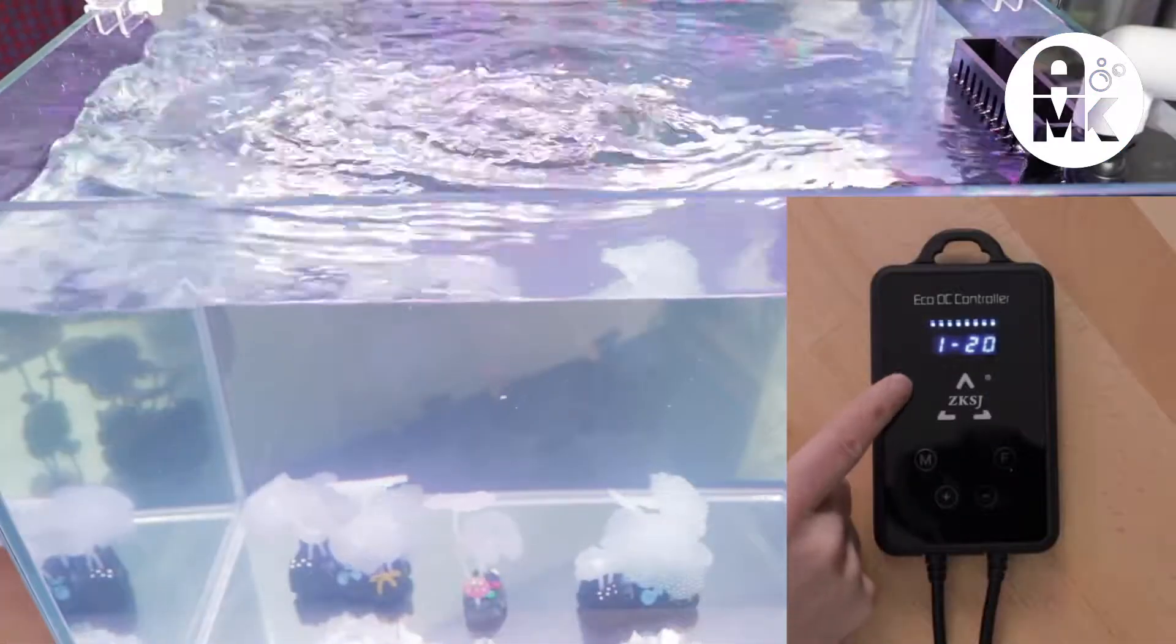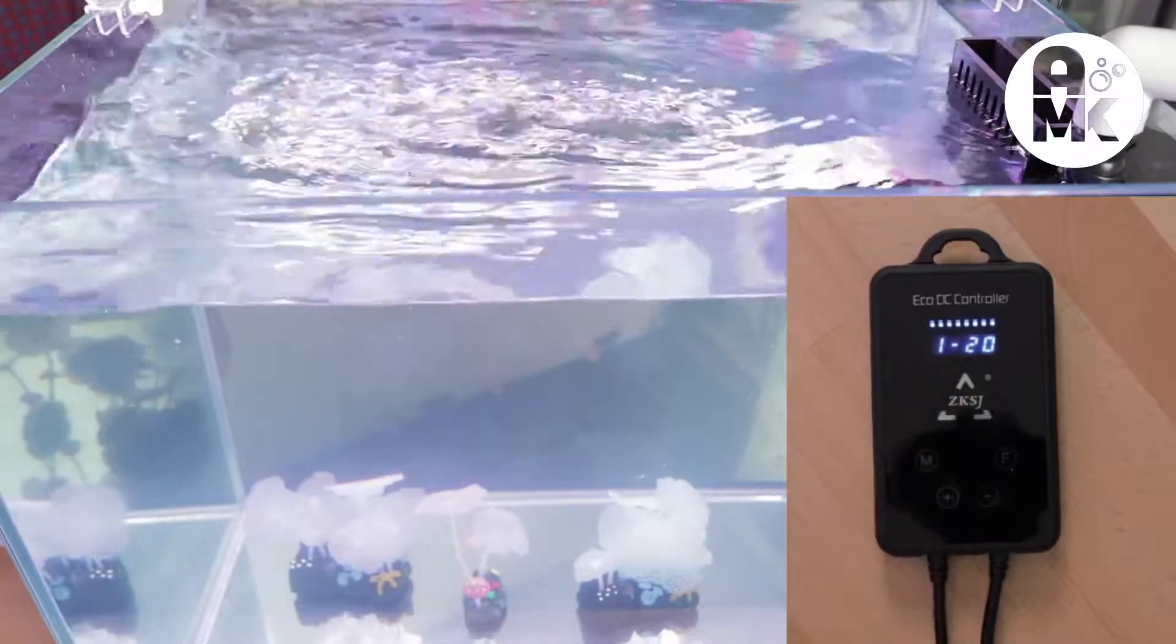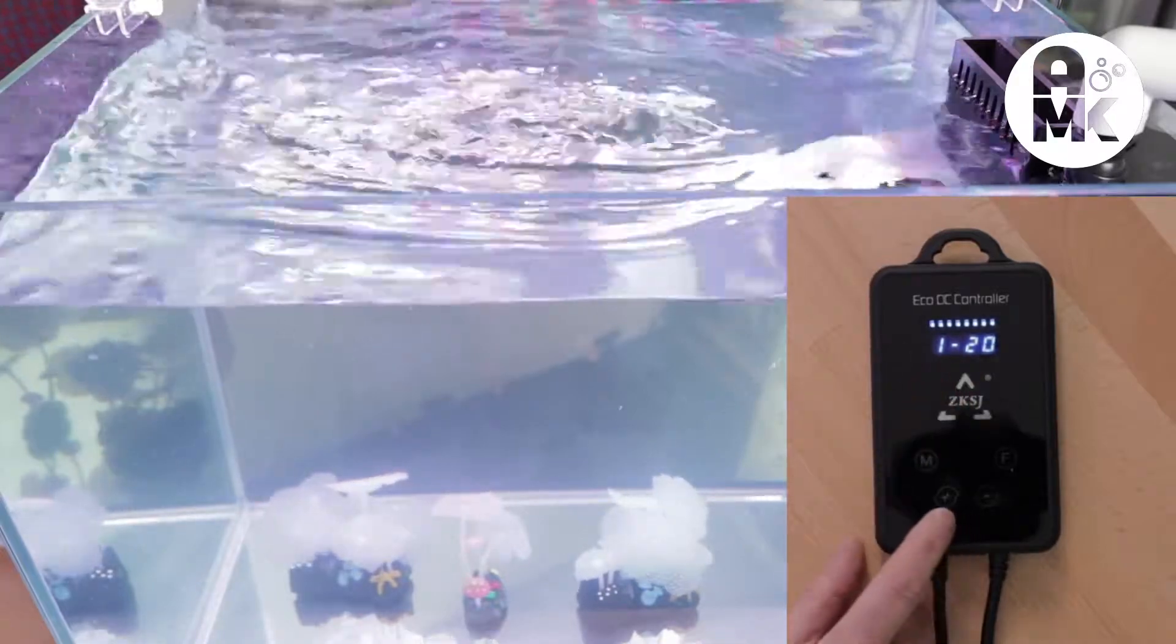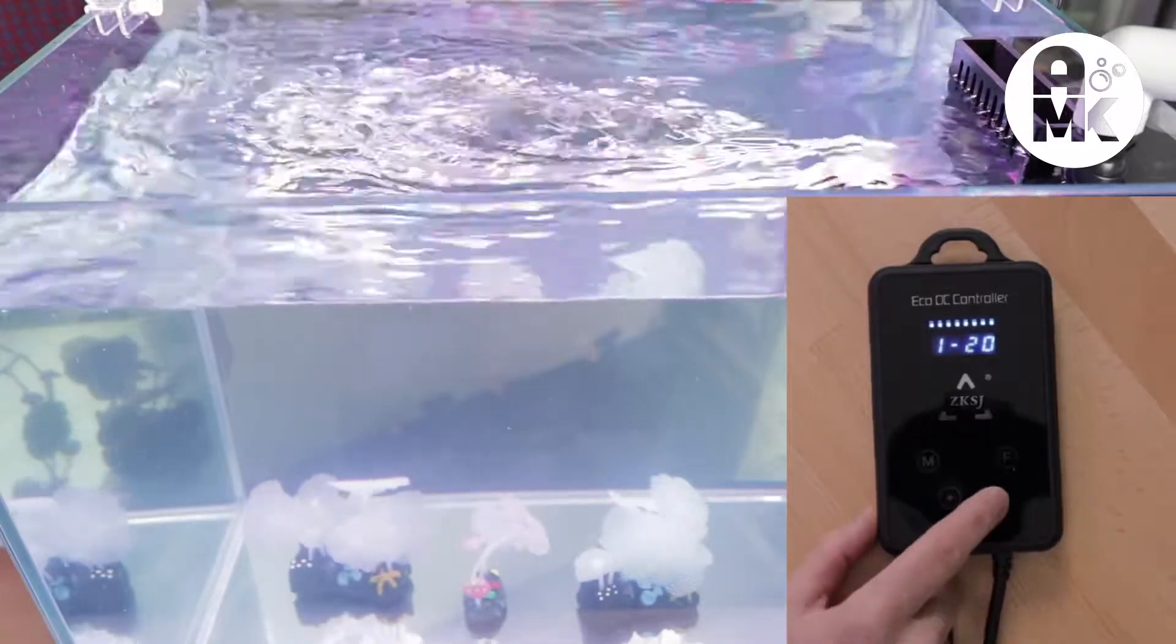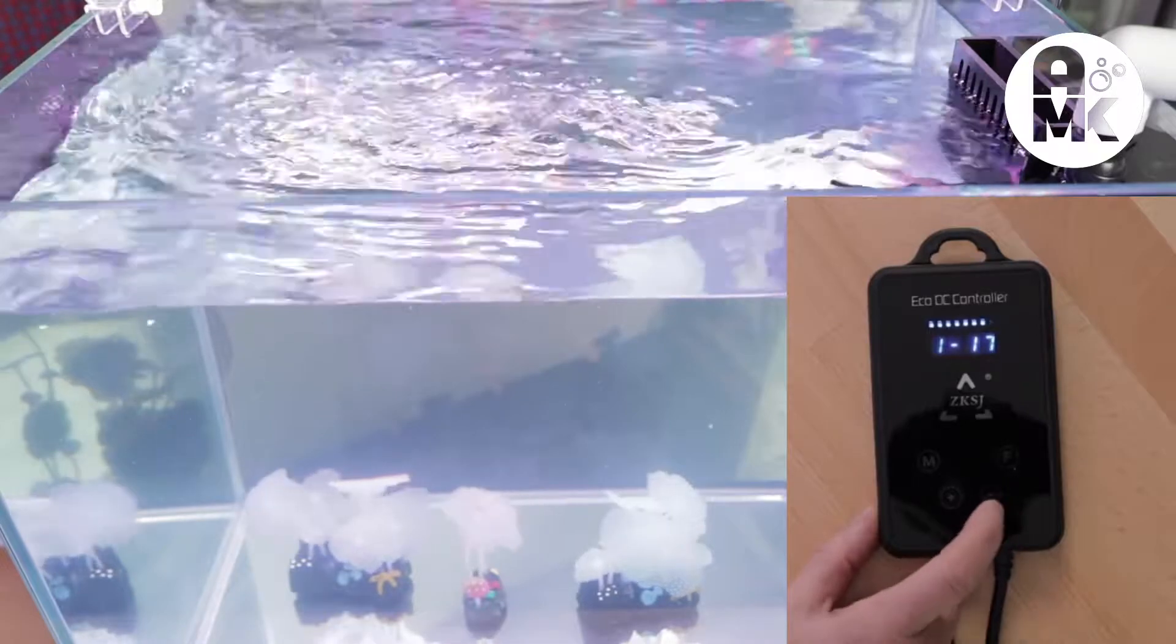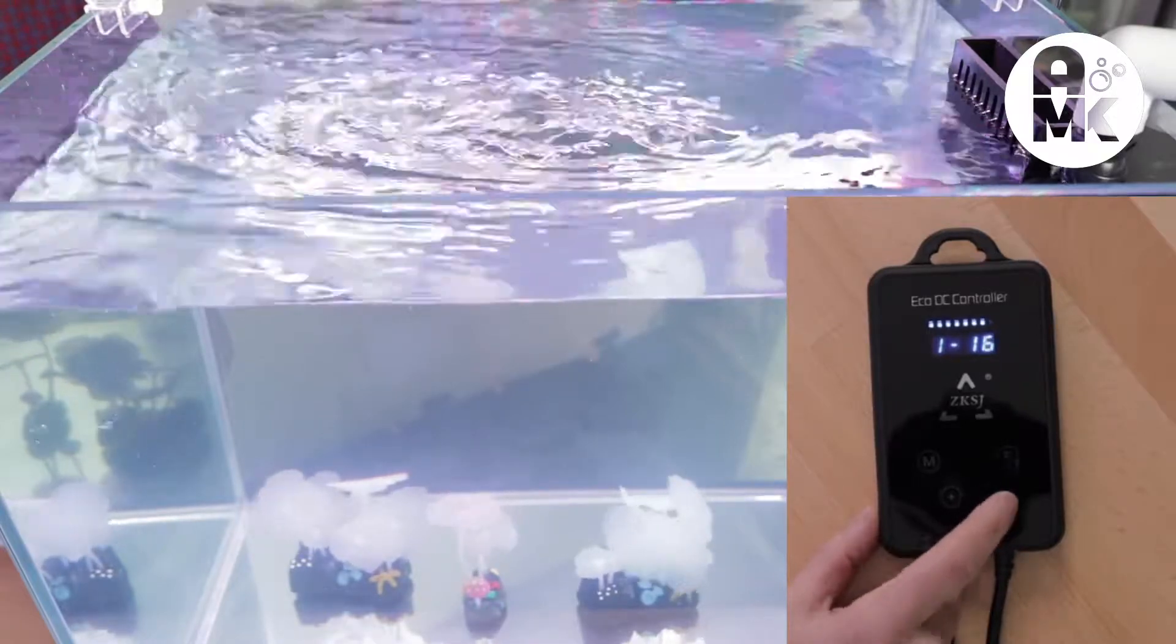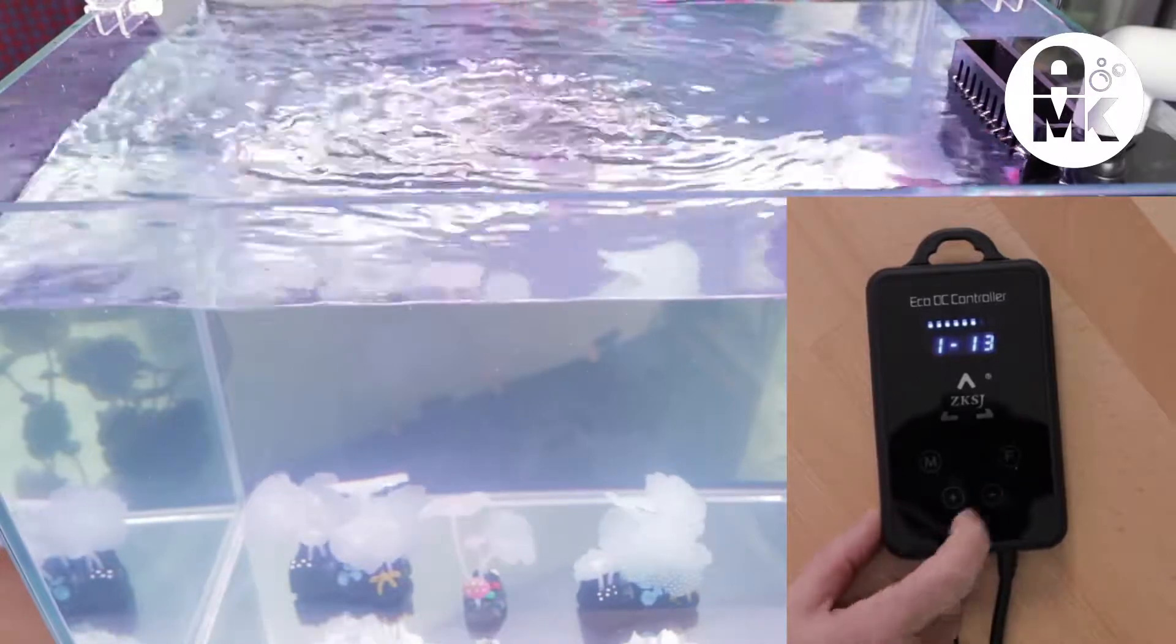So mode one, when it first comes on and the one lets you know that indication, it'll come on at the full speed, which is 20. From there and you can see the flow in the aquarium, you can adjust it down minus 19, 18. You can hear the noise go down because our flow is going down and you can see it.